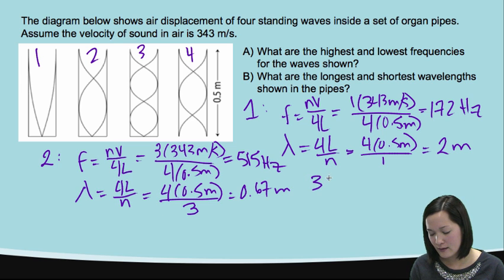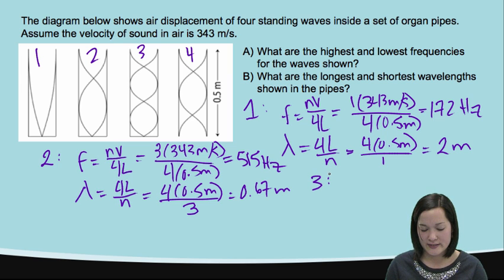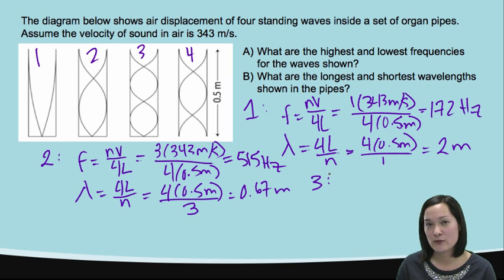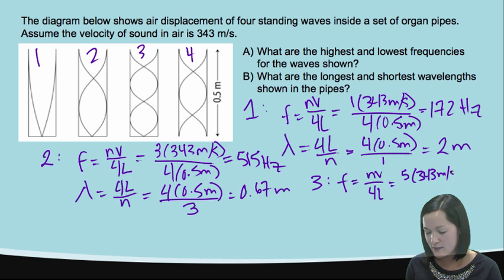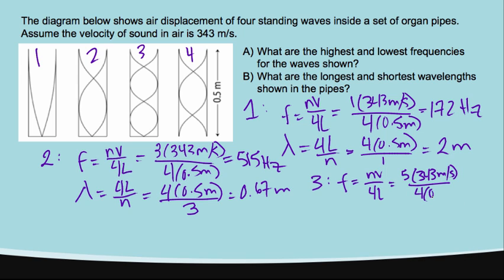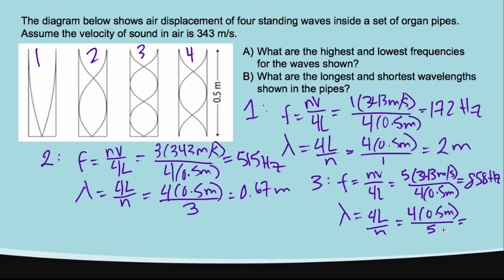For pipe 3, we are at the fifth harmonic for a closed-end tube, so N equals 5. Frequency equals 5 times 343 over 4 times 0.5 meters, giving a frequency of 858 Hz. The wavelength equals 4L over N, which gives 0.4 meters.